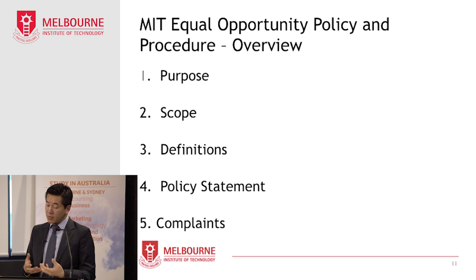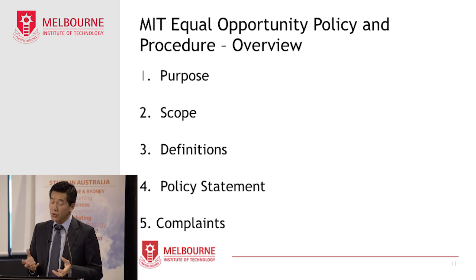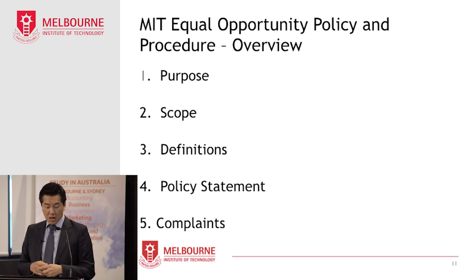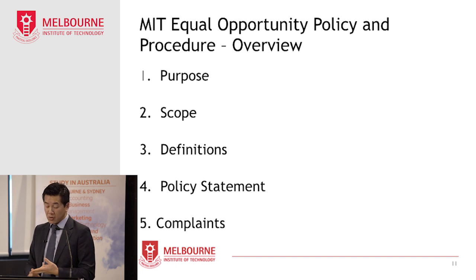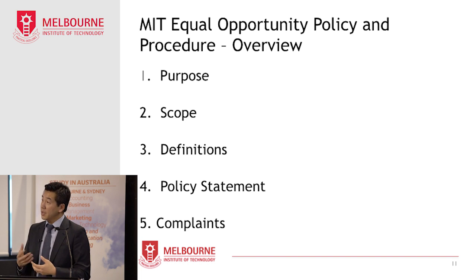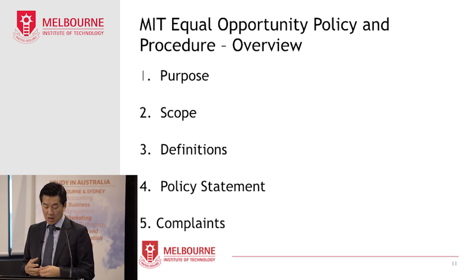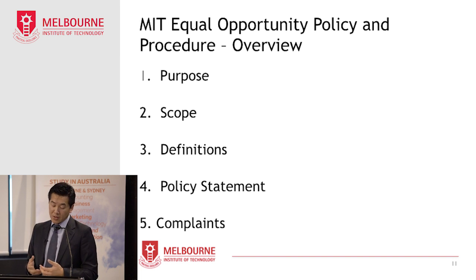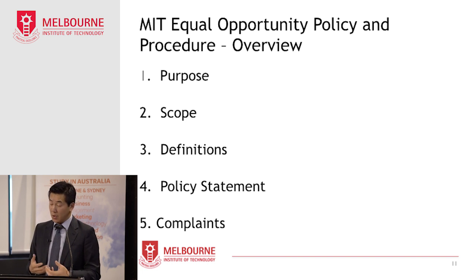Clause two is the scope, and in general the policy covers all staff members and all students engaged in institute-related activities, whether on site or off site — so this would cover conduct and behaviour that occurs on field trips. Clause three sets out the definitions of key terms such as discrimination, harassment, sexual harassment, bullying and victimisation, and these definitions are adopted from relevant Australian laws. Clause four is the policy statement, which sets out the general objectives, the intent of the policy, and examples relating to discrimination, harassment, sexual harassment, bullying and victimisation.